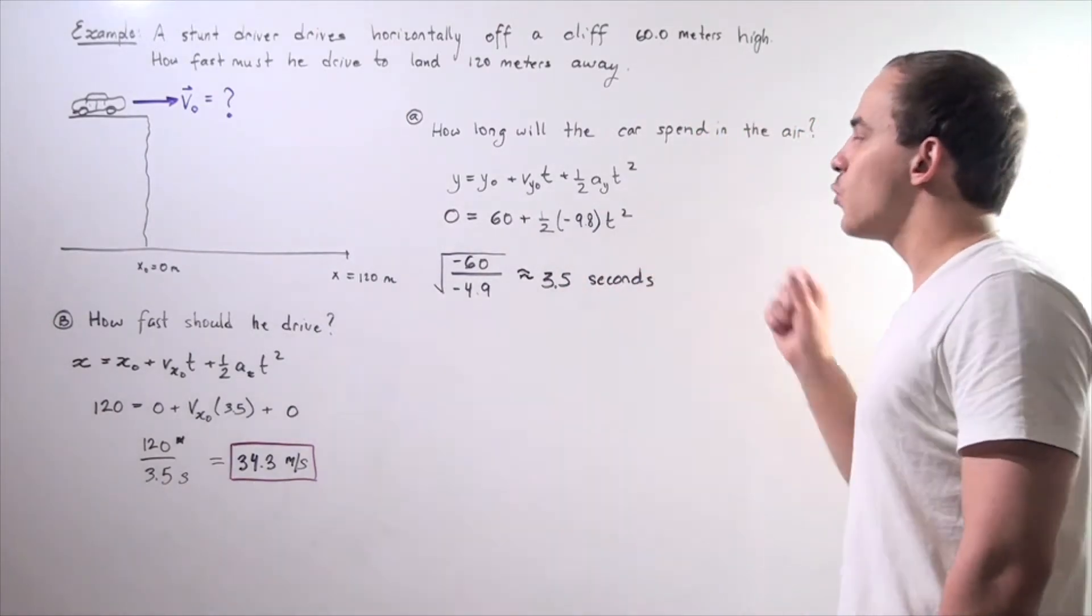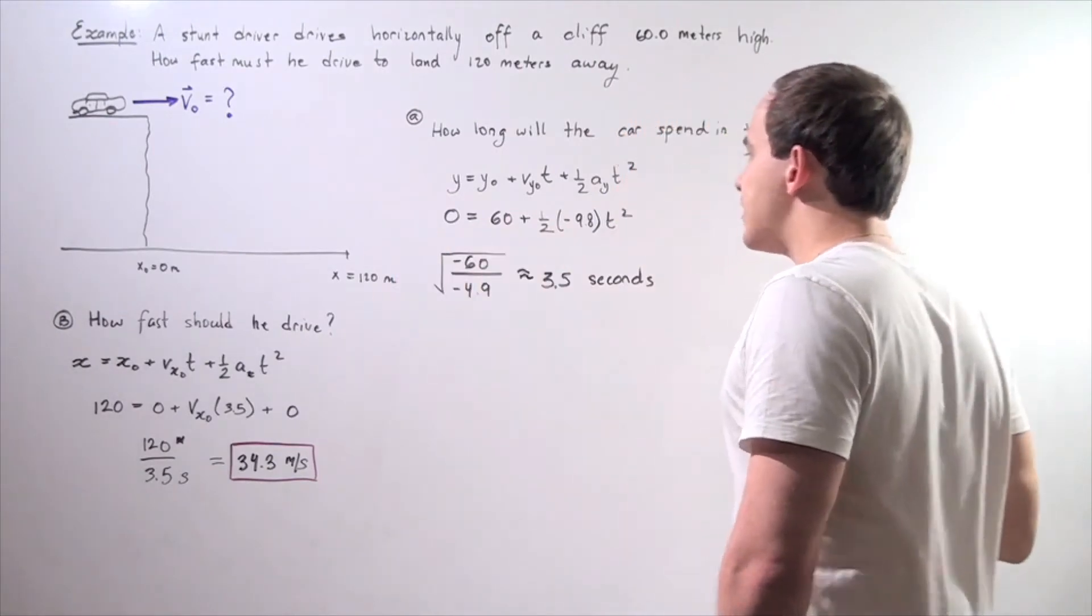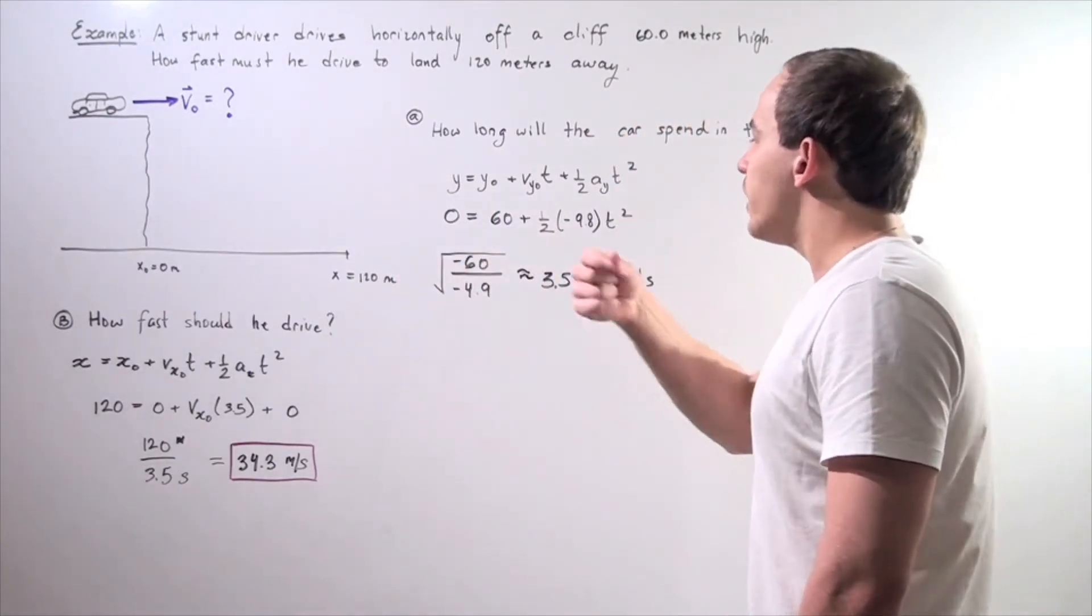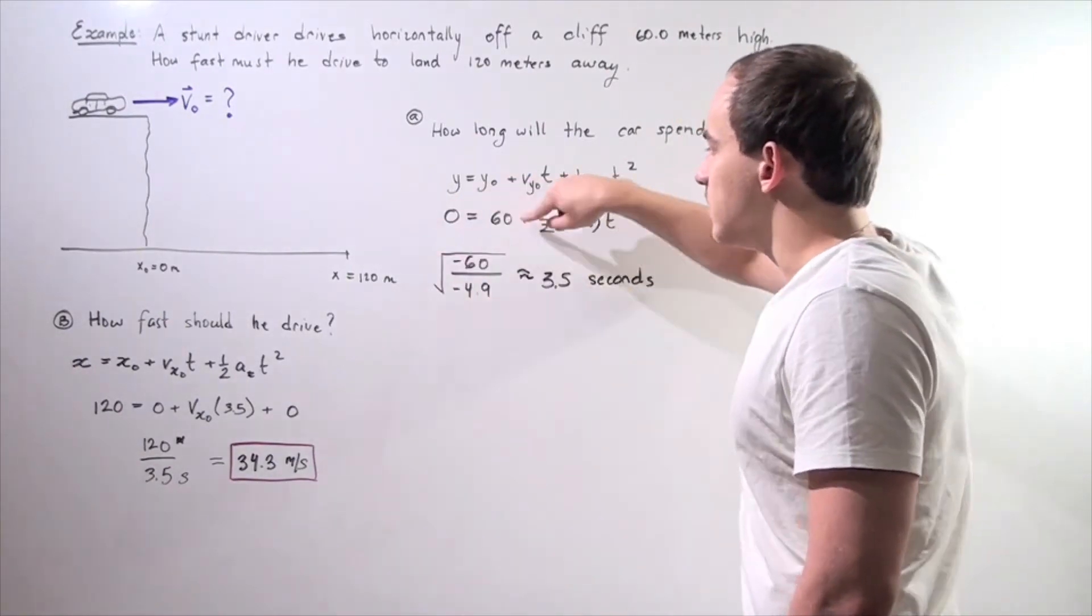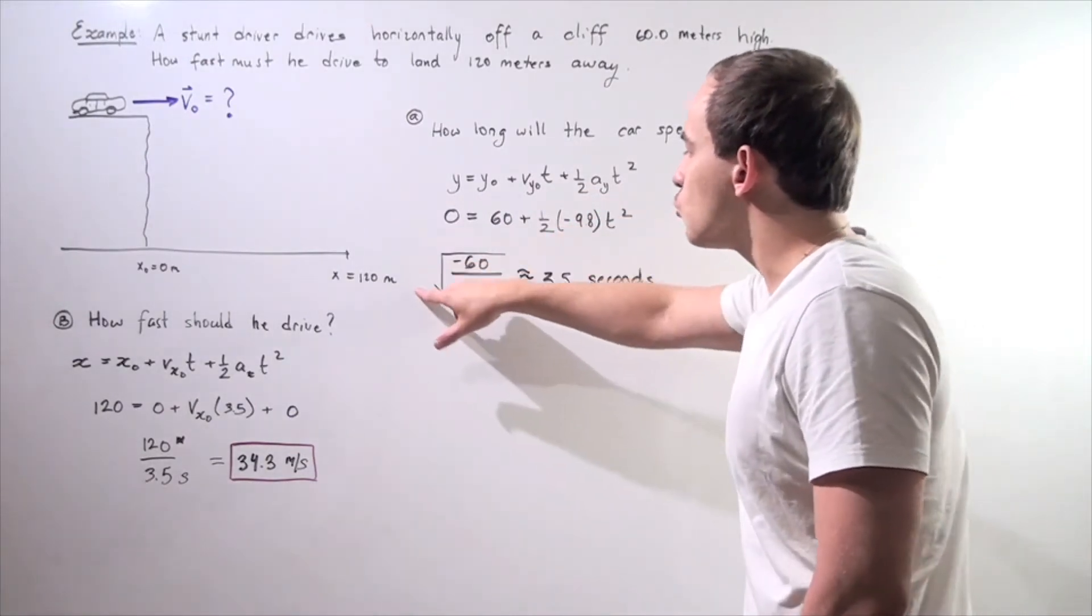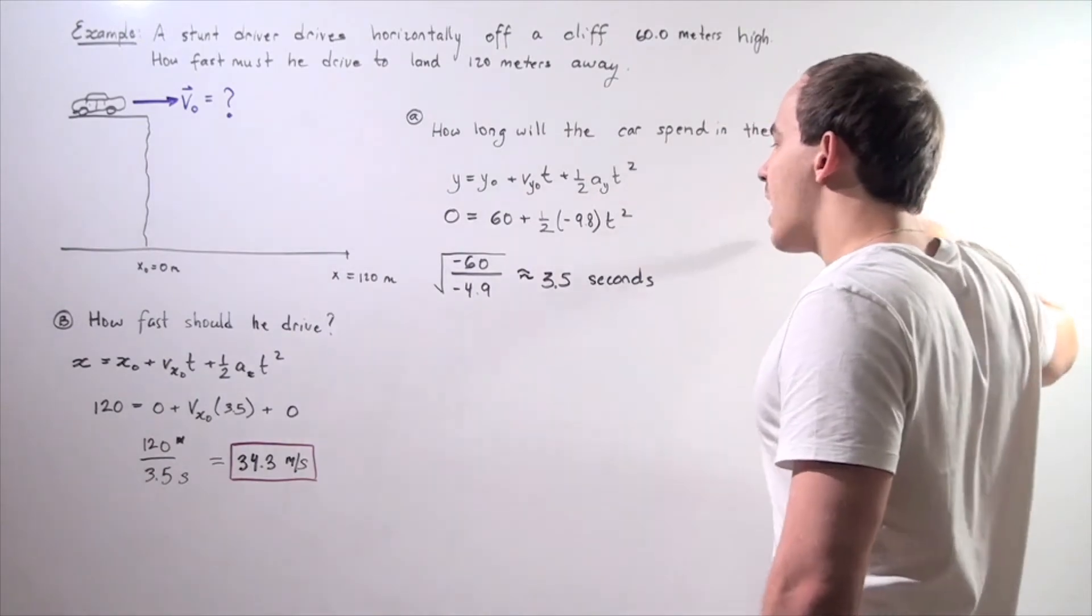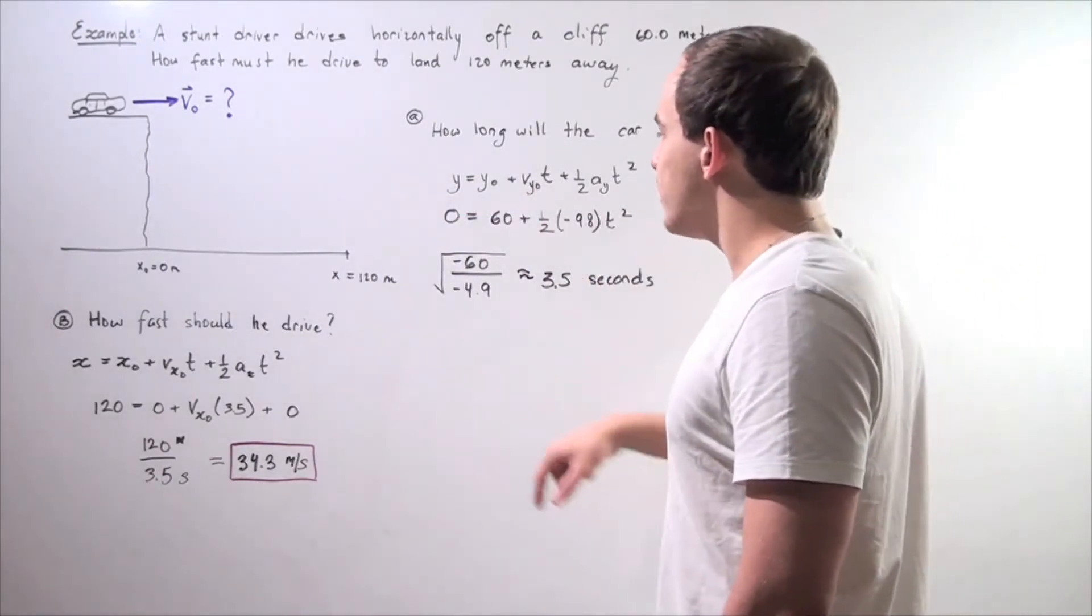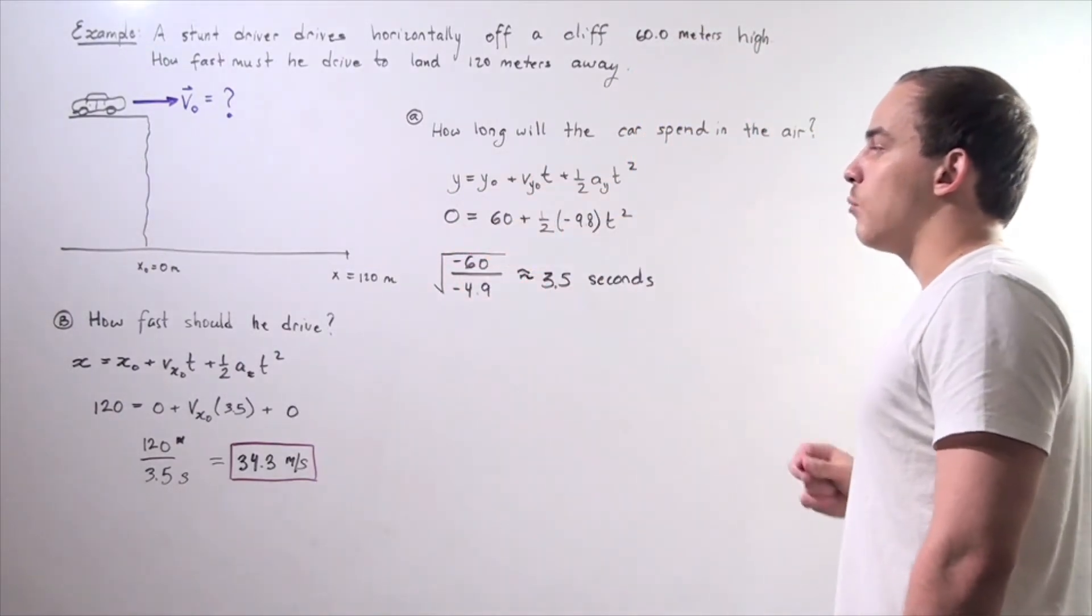So we basically rearrange the equation. So we get negative 60 divided by 0.5 times negative 9.8. So we get radical negative 60 divided by negative 4.9. The radical comes from the fact that in order to get T on one side, we have to take the radical of both sides. And so we get radical negative 60 divided by negative 4.9.